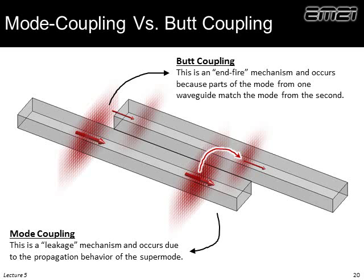Mode coupling and butt coupling are easy to confuse. Butt coupling occurs when a mode traveling along a waveguide suddenly encounters the face of a second waveguide — it's abrupt and instantaneous, exciting the second mode at the interface. Mode coupling is different: over a length, energy slowly and gradually leaks evanescently from one waveguide into the other. Mode coupling is about distributed coupling over distance; butt coupling is an abrupt event at the end of a waveguide.